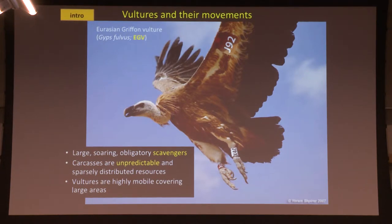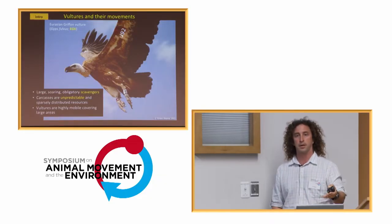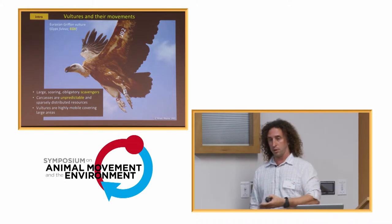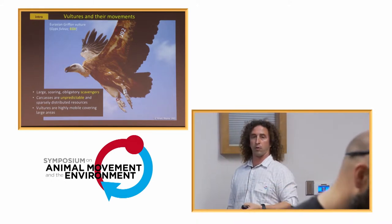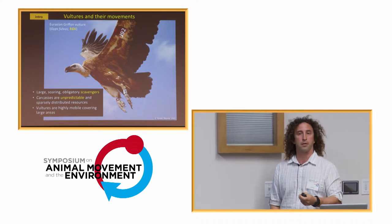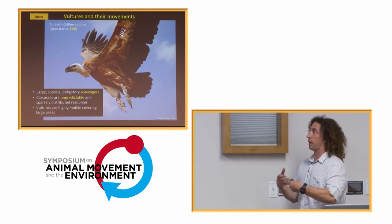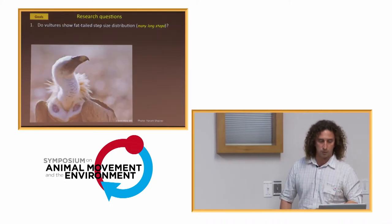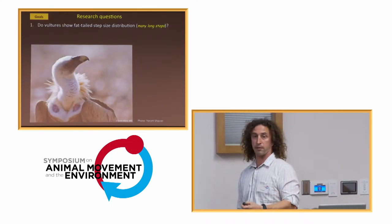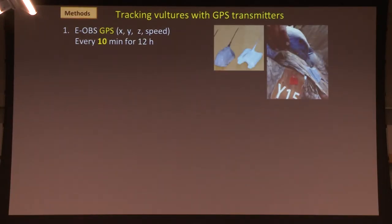I wanted to ask this question specifically about vultures. Old world vultures — very different from the turkey vulture you have here — are obligate scavengers. Carcasses are relatively sparse, and vultures are very mobile, covering wide areas to find them. On the face of it, they look like a suitable study system to check the Levy hypothesis because sparse resources were one of the required conditions. The first question is: do they actually have fat-tail step size distributions? We tracked vultures using EOBS tags, working at one point every 10 minutes.